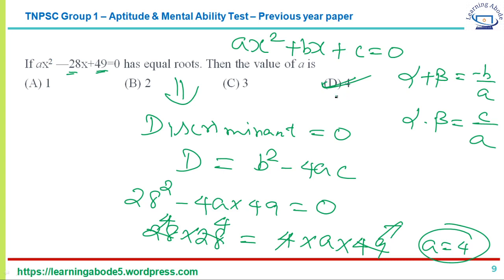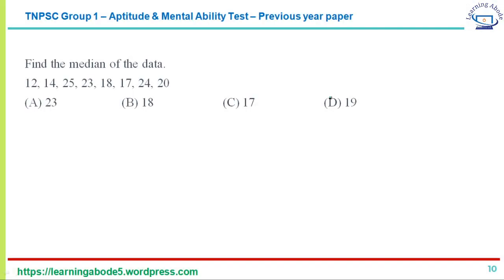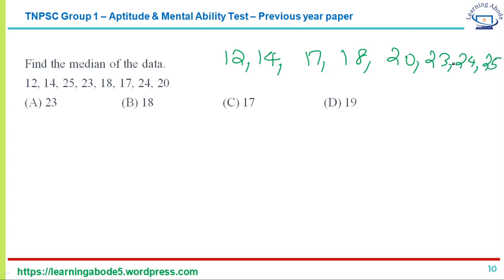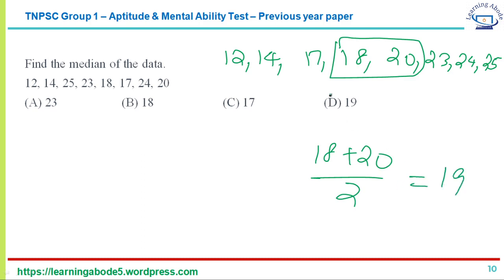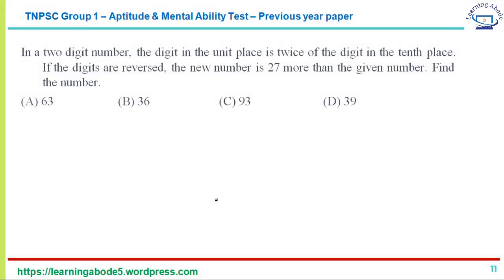The next question asks for the median of another set of numbers. Arranging in ascending order: 12, 14, 17, 18, 20, 23, 24, 25 — that is 8 terms (even). The median is the average of the two middle terms: (18 + 20) ÷ 2 = 38 ÷ 2 = 19. Answer option D — 19. This is the second median question in the same paper.